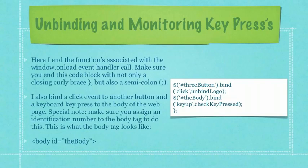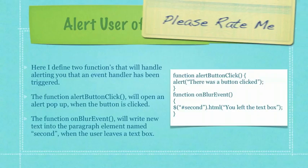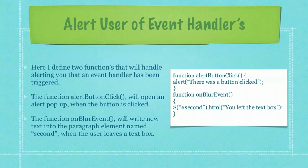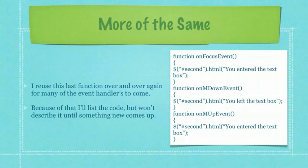Special note: make sure you assign an identification number to the body tag to be able to do this. This is what the body tag would look like with the identification code attached to it. Here I define two functions that will handle alerting you that an event handler has been triggered. The function alertButtonClick will open an alert pop-up when the button is clicked. The function onBlurEvent will write new text into the paragraph element named 'second' when the user leaves a text box. I reuse this last function over and over again for many of the event handlers to come — I'll list the code but won't describe it until something new comes up.